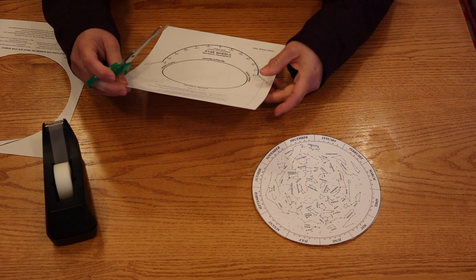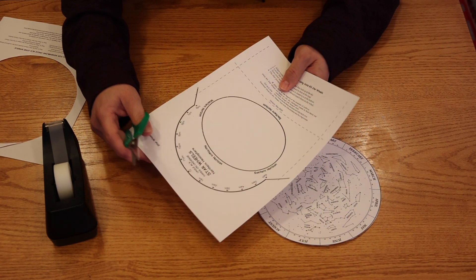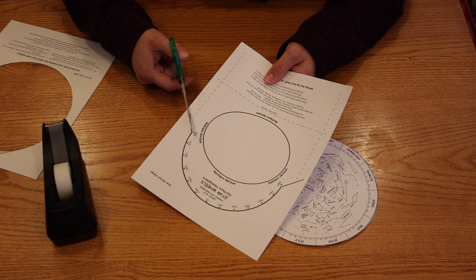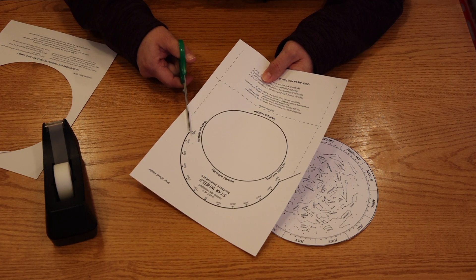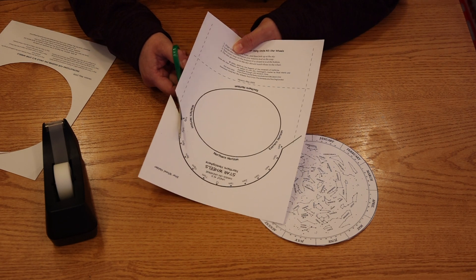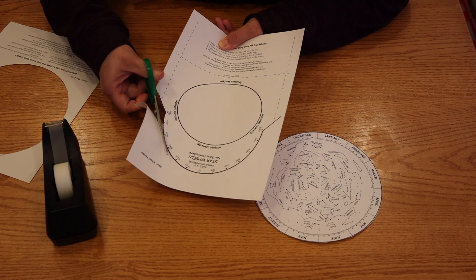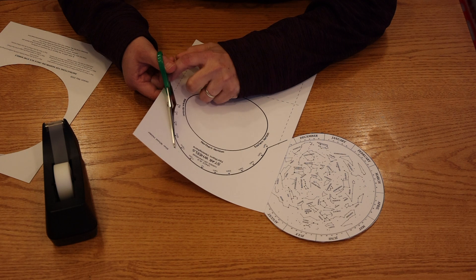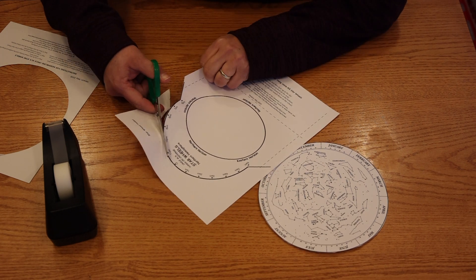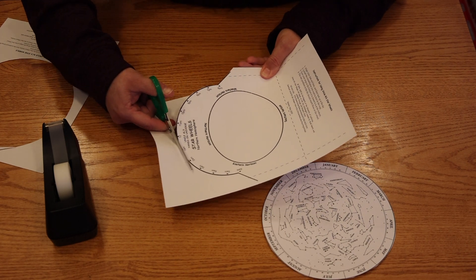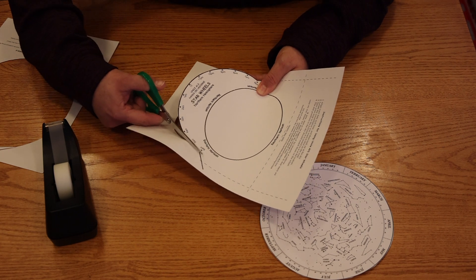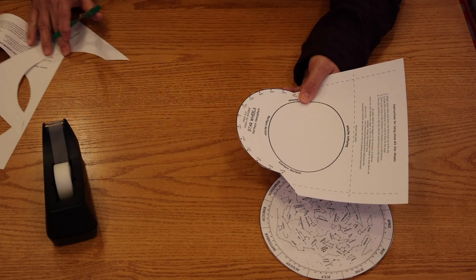So set the star wheel aside and let's cut out the frame or the holder. Start on the edge of the paper where the heavy black line comes to the edge and cut along that curved line that has all the times printed along it. Make sure you leave the times attached, that part you want to keep. Cut all the way around that curved line, all the way down to that diagonal line and then straight back off the edge of the page on the other side.